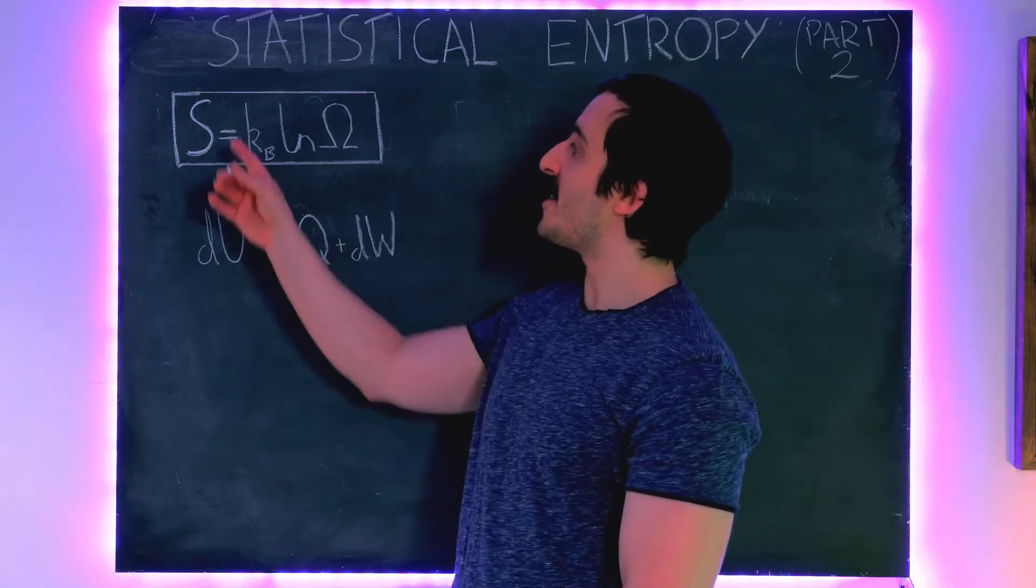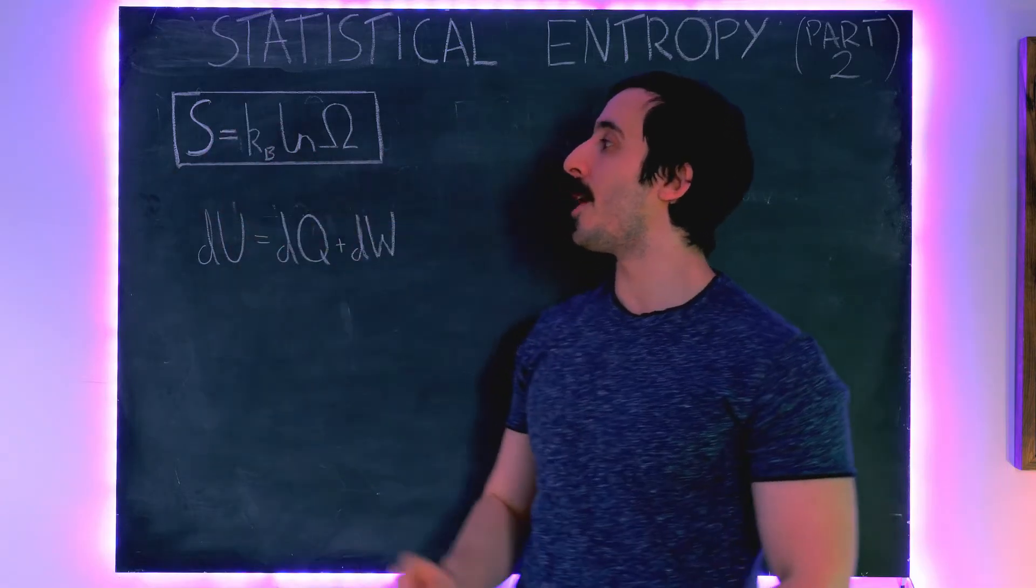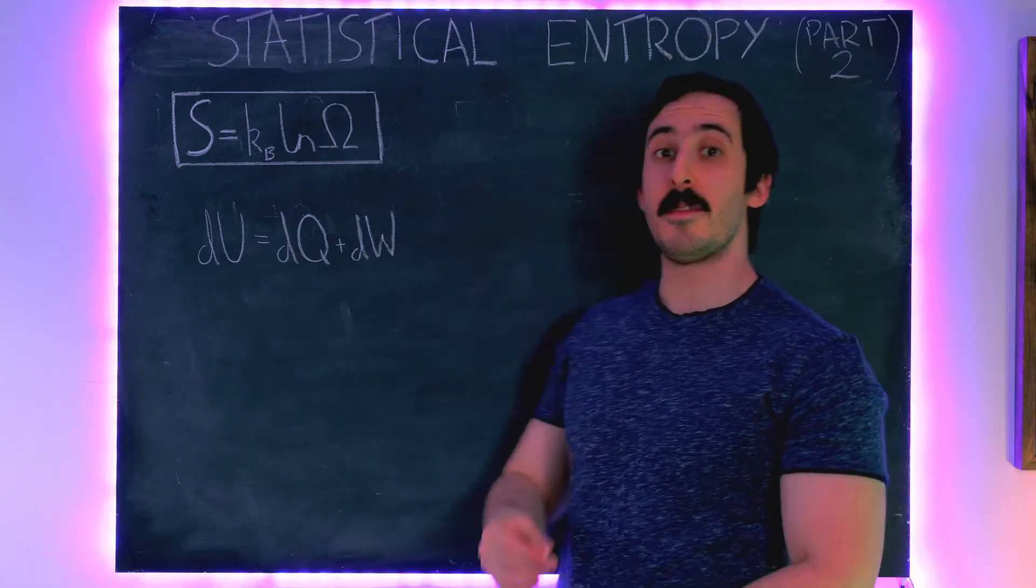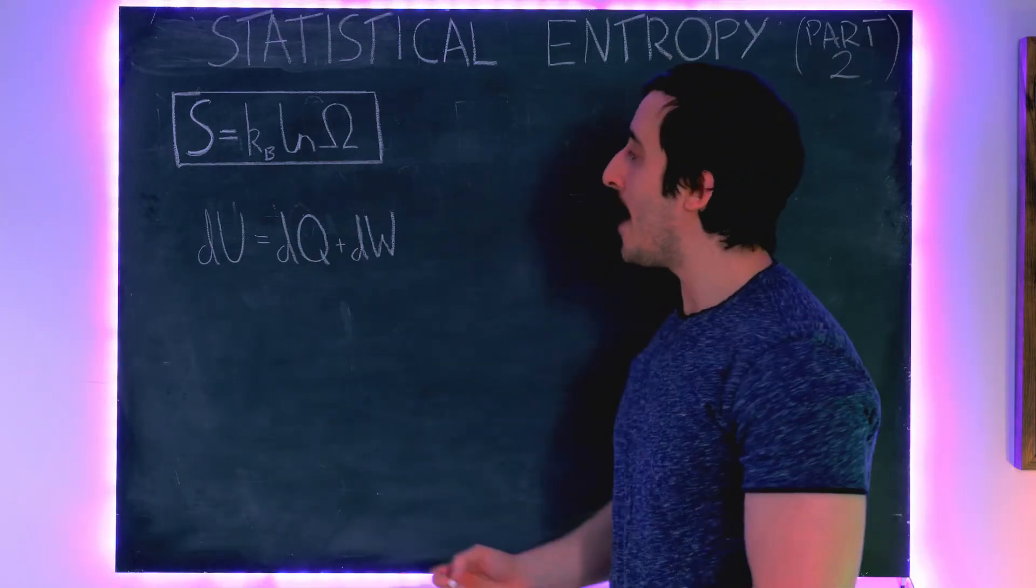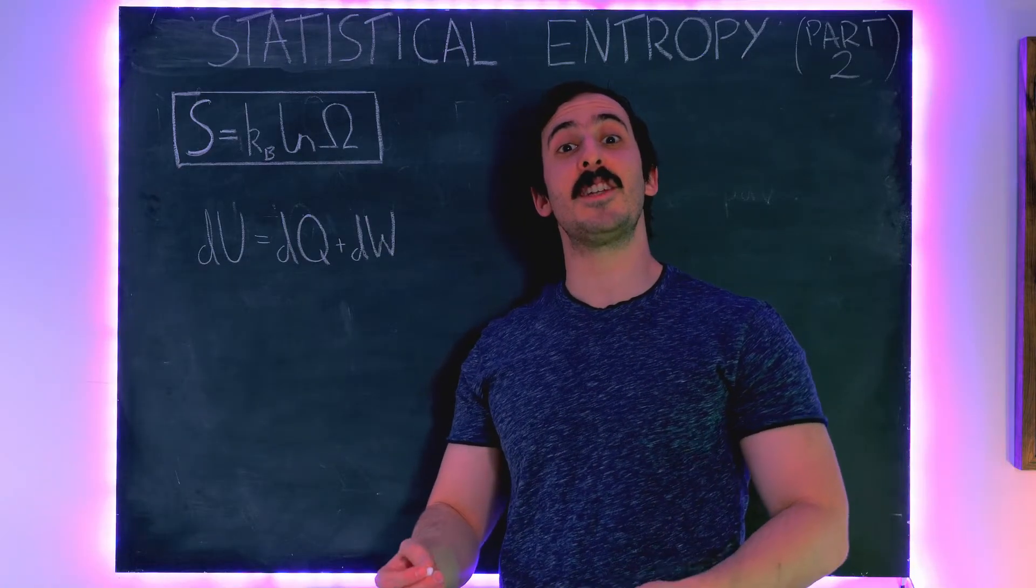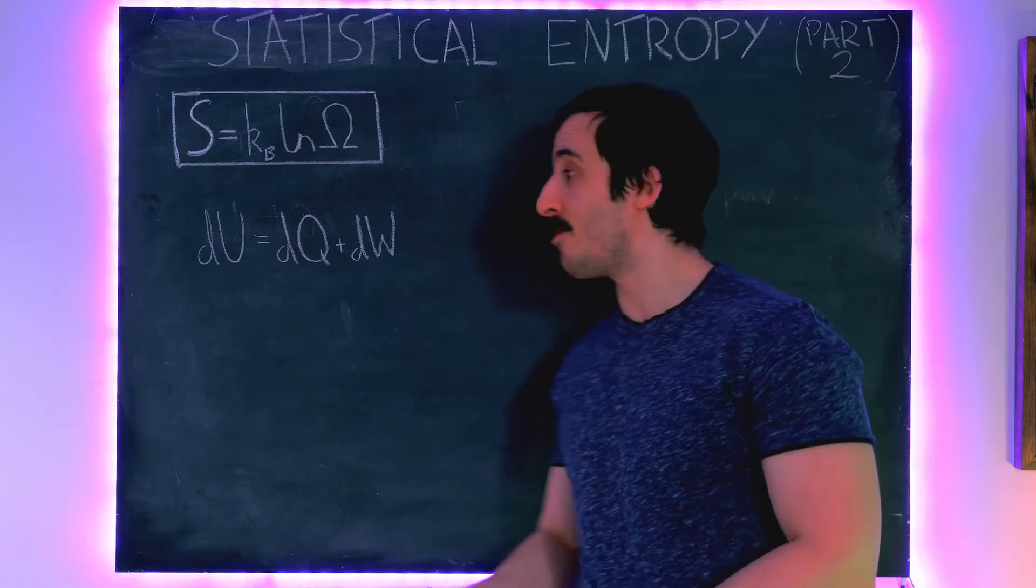So what we're going to do in this video is derive this equation for entropy here, S is equal to kB ln Ω, where Ω is the number of associated microstates with the macrostate our system is in. And we're going to do that using the first law of thermodynamics as well as the definition for temperature which we derived in an earlier video, the statistical basis for temperature.